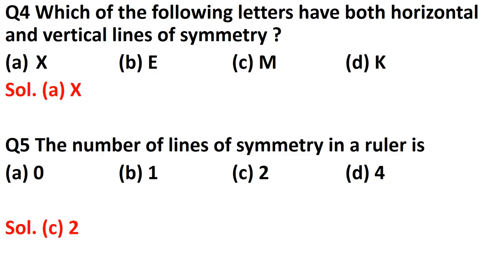Question number four: which of the following letters have both horizontal and vertical lines of symmetry? Out of the four options, the correct answer is option A, that is X. X has both horizontal and vertical lines of symmetry. Letter E has only a horizontal line of symmetry, M has only a vertical line of symmetry, and K has only a horizontal line of symmetry.